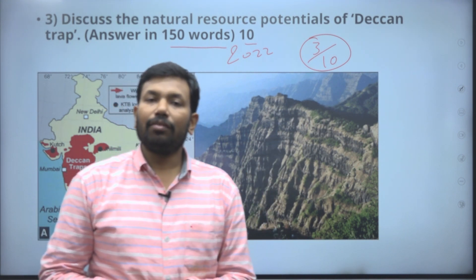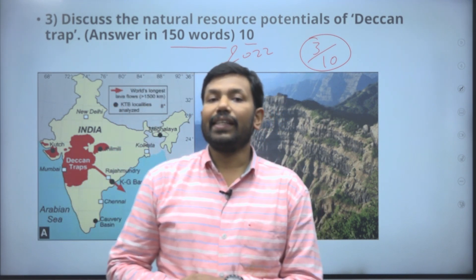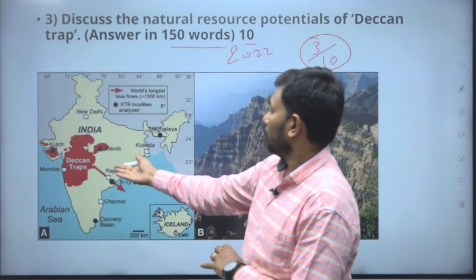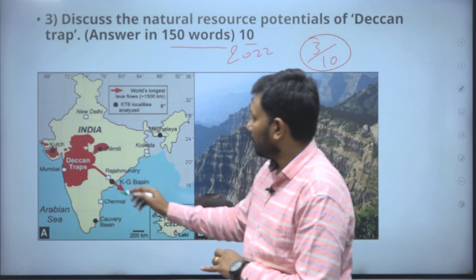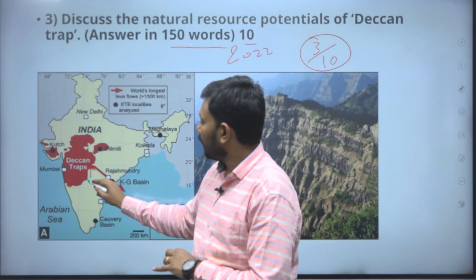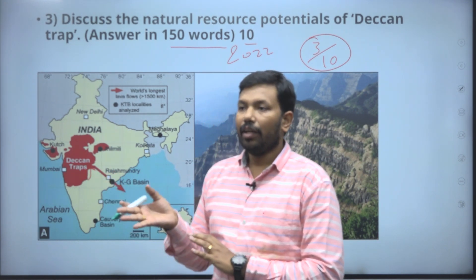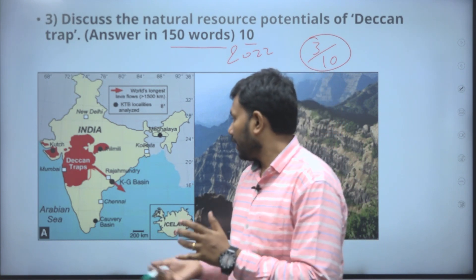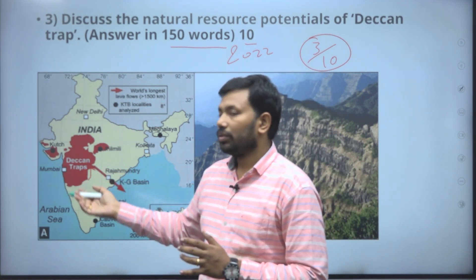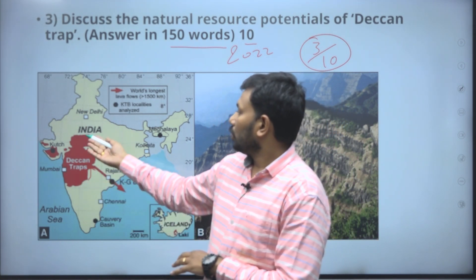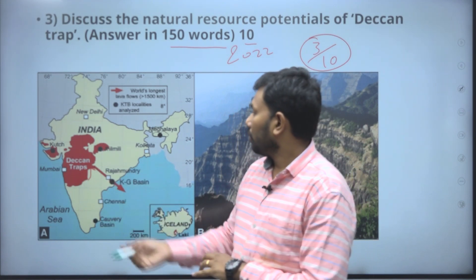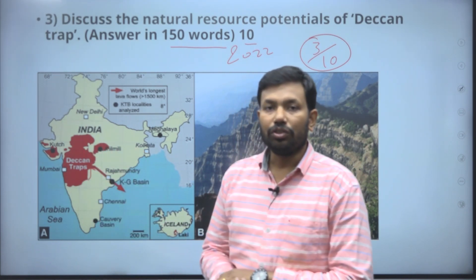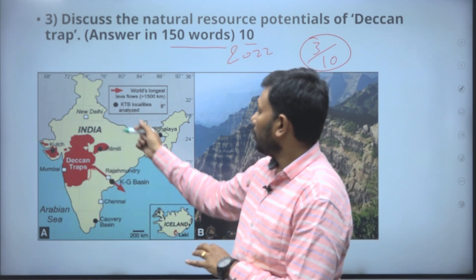For Deccan Trap, you need to know which areas are covered and which states are involved. The boundary extends from Gujarat to Telangana, west of Hyderabad in the Ananthagiri hills, through central Karnataka, western and central Madhya Pradesh, and southern Gujarat. These are the areas you should know.